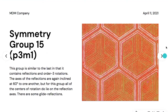Symmetry group fifteen is named P3M1. This group is similar to the last in that it contains reflections and order-three rotations. The axes of the reflections are again inclined at 60 degrees to one another, but for this group, all of the centers of rotation do lie on the reflection axes. There are some glide reflections though.